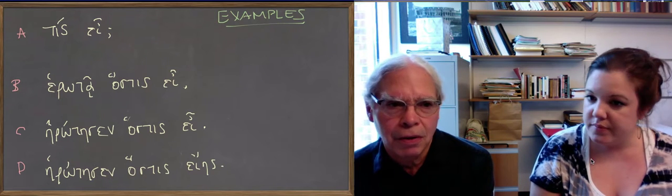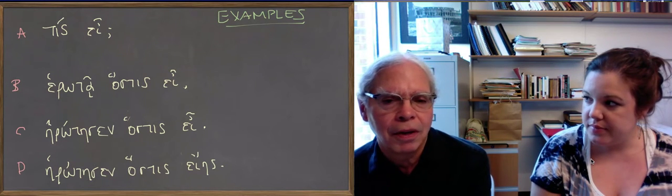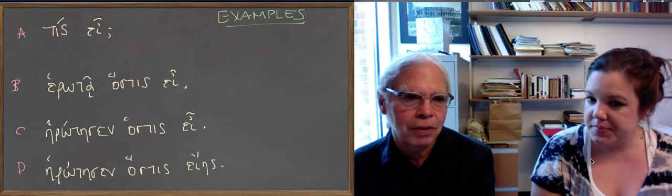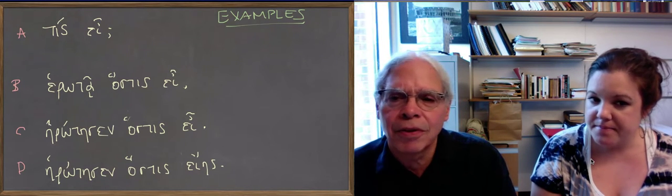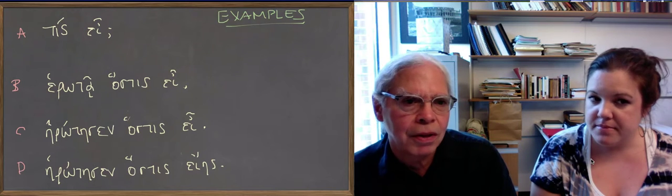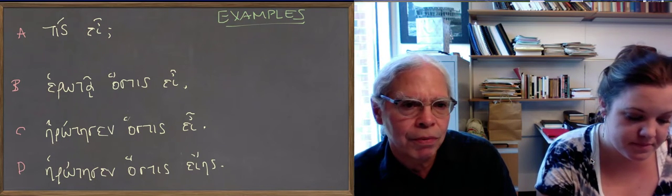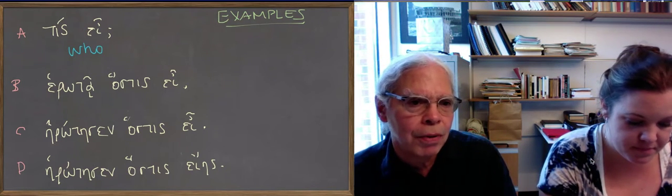Tis being the direct interrogative and indefinite adjective, but here it's an interrogative. You can tell—it's got an acute accent and it's the first word in the sentence. Ei being the second person singular of the verb to be. So, 'who are you?'